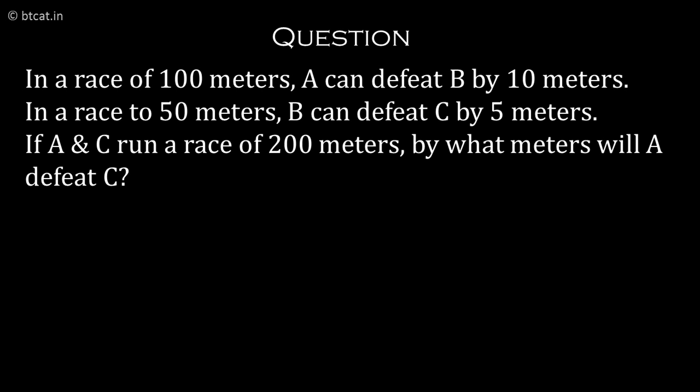Let us take one XAT question which has come on this concept. In a race of 100 meters, A can defeat B by 10 meters. In a race of 50 meters, B can defeat C by 5 meters. If A and C both run a race of 200 meters, by how many meters will A defeat C? In other words, we have to find the ratio of A to C.